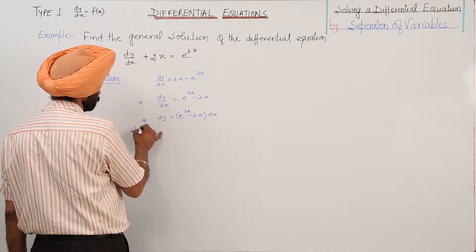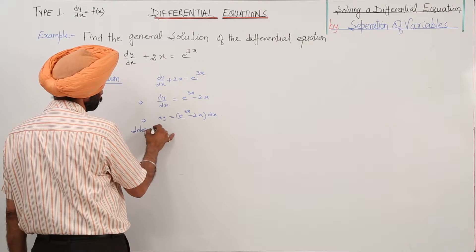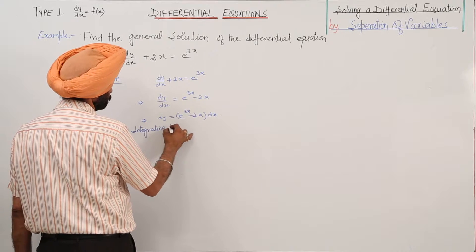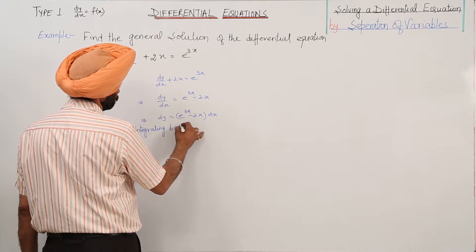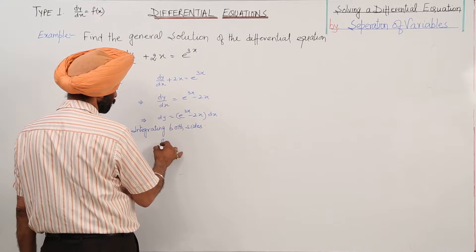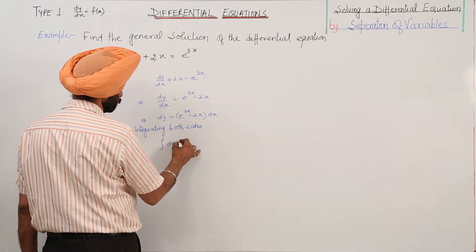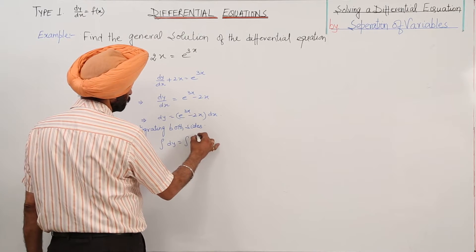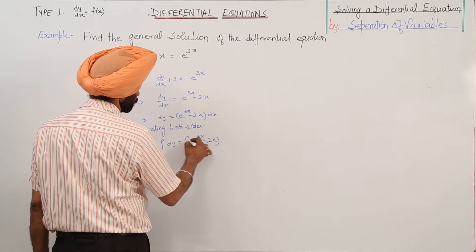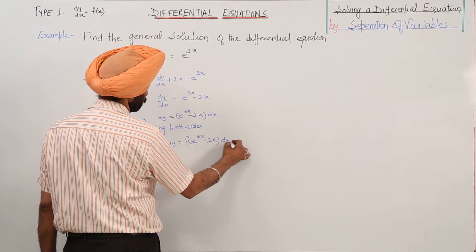Now, integrating both sides. Integration of dy is equal to integration of e raise to power 3x minus 2x dx.